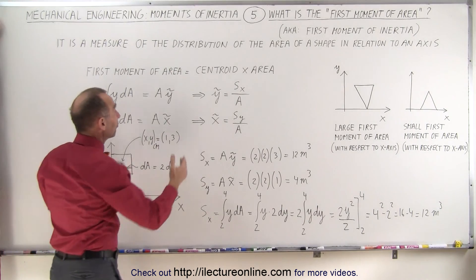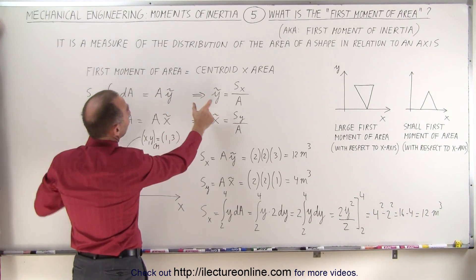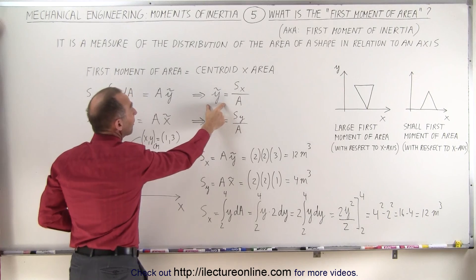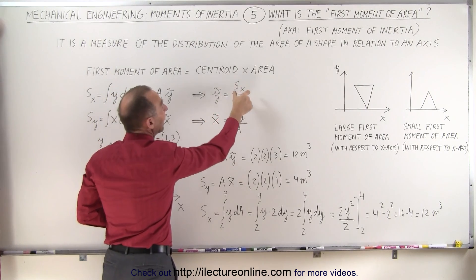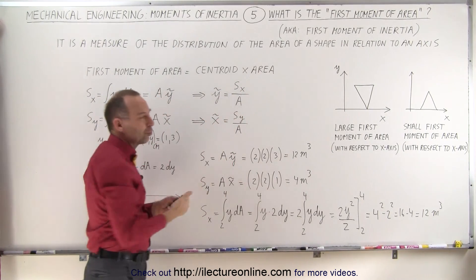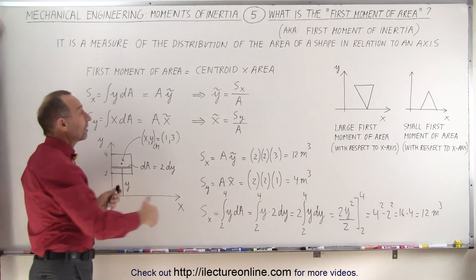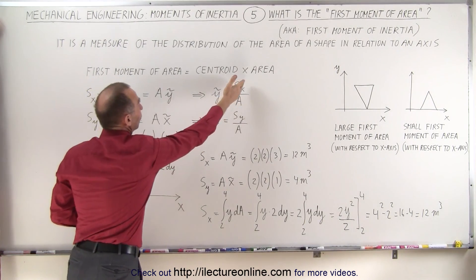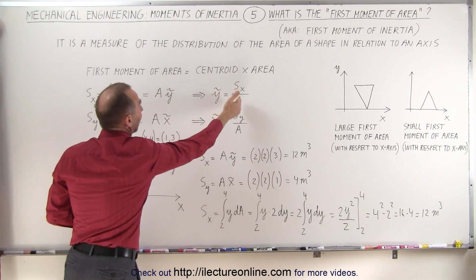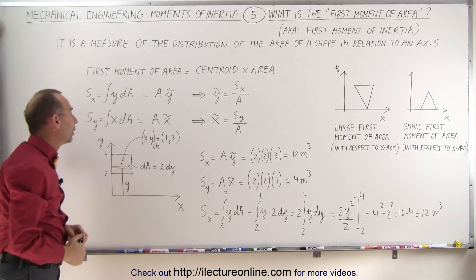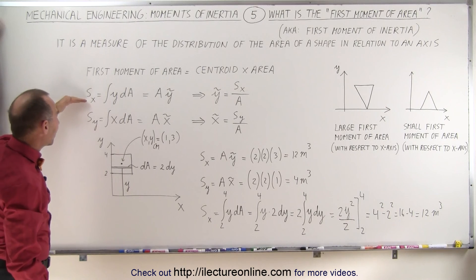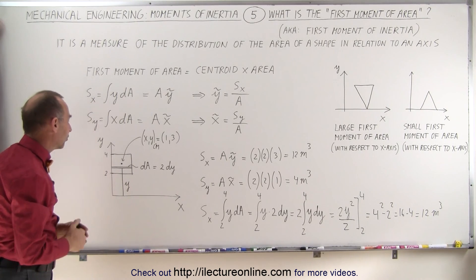We can then calculate the centroid by taking the first moment of area and dividing by the area. So this is really why this is used - a lot of the application is exactly so we can find the centroid by first finding the first moment of area and then dividing it by the area. We can do it with respect to the x-axis and with respect to the y-axis.